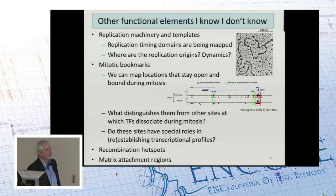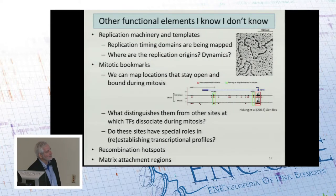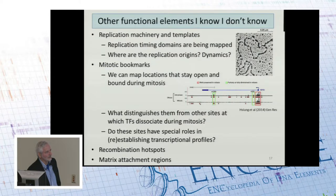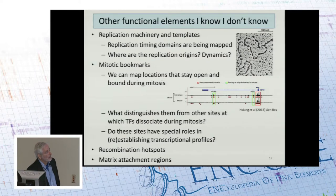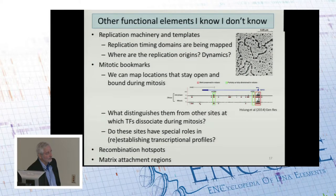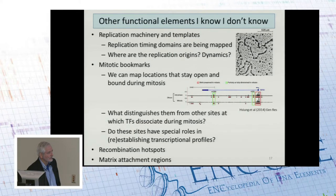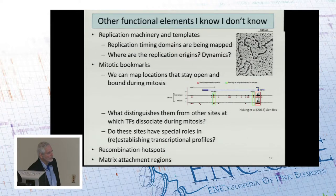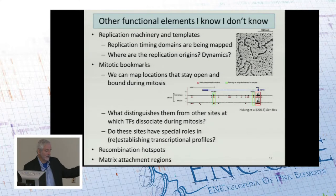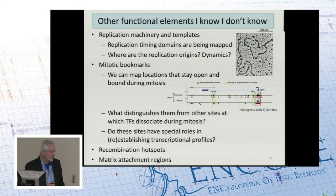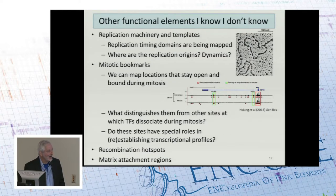There are lots of other functional elements — some things you don't know you don't know, and others I know I don't know. Replication machinery — timing domains are coming out and there's beautiful data, but I don't think we know where the origins are or what sequences determine those. We haven't mentioned much about how cells remember what they were as they go through mitosis. You can do factor binding through mitosis, and you see some things that are stable through mitosis and some where accessibility changes during mitosis — what determines them? Is this a special type of bound site? Recombination hotspots — I don't think we know nearly as much as I'd like about those, or matrix attachment regions. There are lots of other features to try to get at.